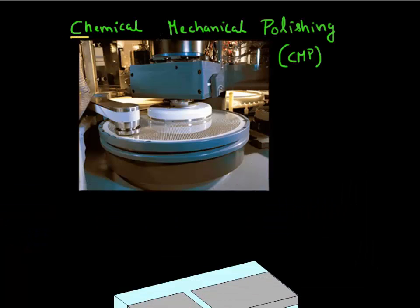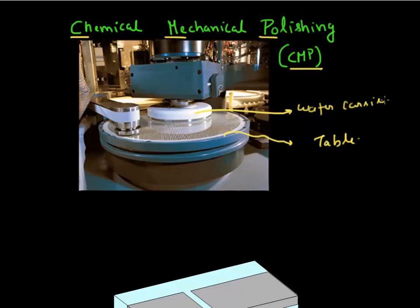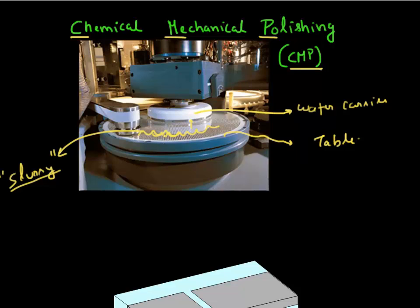Shown here is a picture of one of the CMP tools. We can identify the table over here, and we can see the wafer carrier. The wafer is probably attached below this carrier, and there'll also be slurry on the surface, so the surface would be wet with slurry. The chemistry of the slurry is also very important — depending upon what material we are trying to polish, we'll use a different slurry. But in principle it looks like any other polishing tool, like a tool you would use to polish your knives.